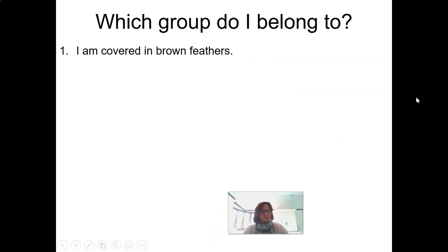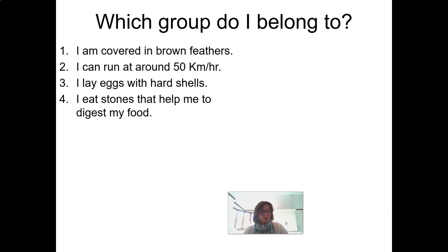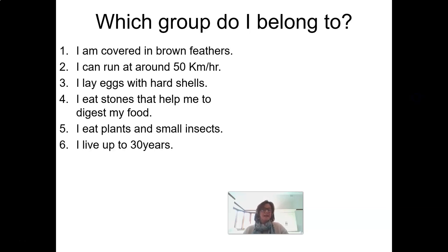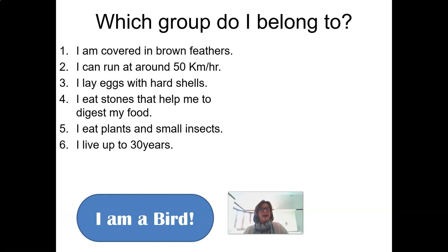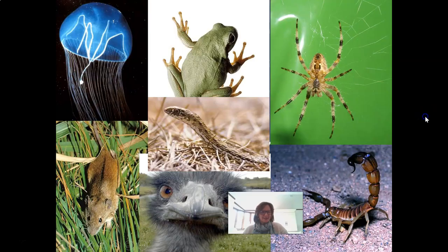One more: I am covered in brown feathers, I can run at about 50 kilometers an hour, I lay eggs with hard shells, I eat stones that help me digest my food, I eat plants and small insects, and I live up to 30 years. I am a bird — an emu. Look at these gorgeous animals, Grade 7 — we have some vertebrates and some invertebrates. Amazing animals and the diversity of animals as we know them — there is just so much to learn.